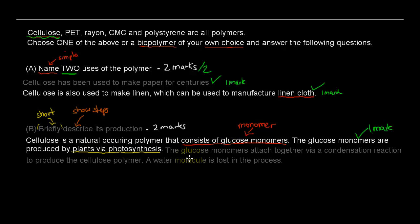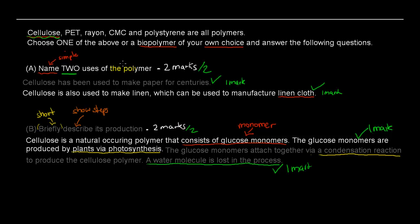To get full marks, we still have to describe how the polymerization happens. The glucose monomers attach together by a condensation reaction — that phrase is vitally important, because it tells us the polymer is a condensation polymer. To produce the cellulose polymer, a water molecule is lost in the process. This is also very important: in a condensation polymer, we lose a small molecule, which in this case is water. If you write 'condensation polymer' and add that a water molecule is lost, that's ideal and earns you the second mark — two out of two.